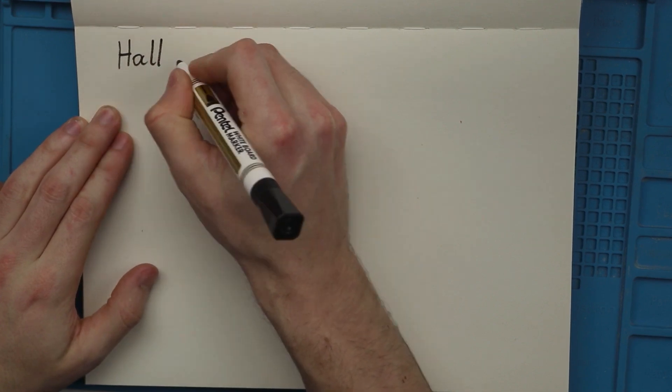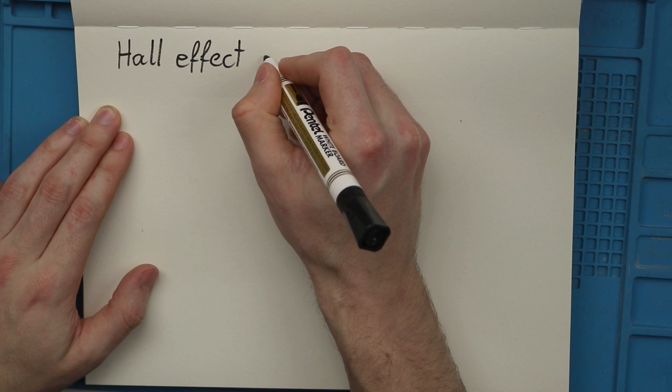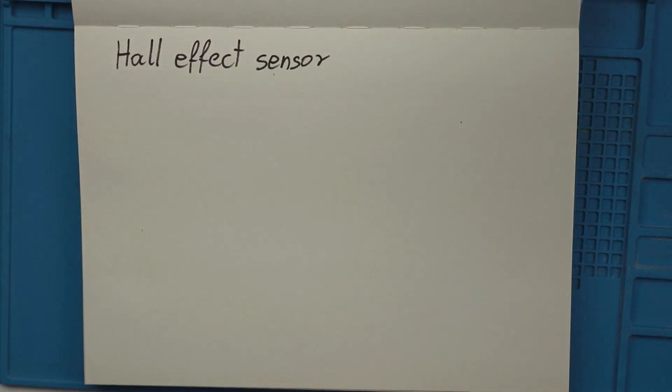Now might be a good moment to explain what a Hall sensor is. A Hall effect sensor detects the magnitude of a magnetic field. So simply put, it detects how far a magnet is.